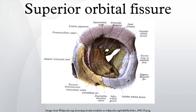The superior orbital fissure is a foramen in the skull, although strictly it is more of a cleft, lying between the lesser and greater wings of the sphenoid bone. A number of important anatomical structures pass through the fissure, and these can be damaged in orbital trauma, particularly blowout fractures through the floor of the orbit into the maxillary sinus.